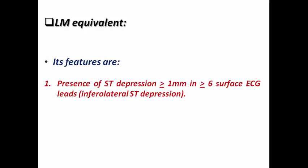What are the ECG features needed to diagnose left main equivalent? It means there is ST depression of more than or equal to 1 mm in 6 or more surface ECG leads — infralateral ST depression — plus ST elevation in AVR and/or V1 of more than or equal to 1 mm. So we are speaking about ST elevation in 1 or 2 leads only and diffuse ST depression mostly in the infralateral ECG leads.